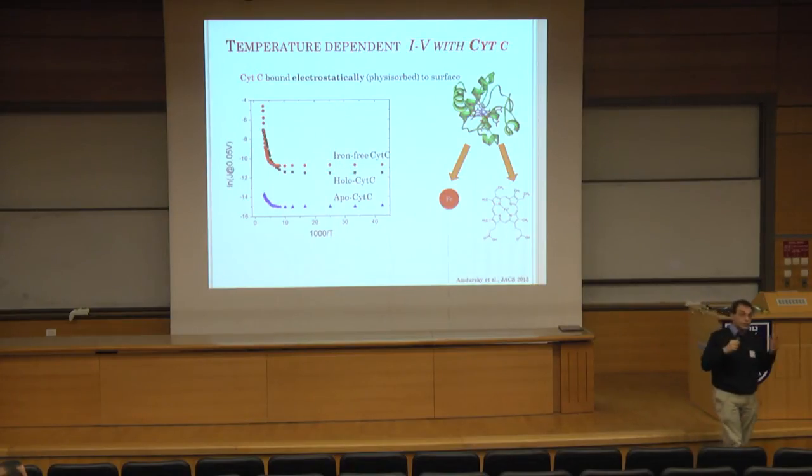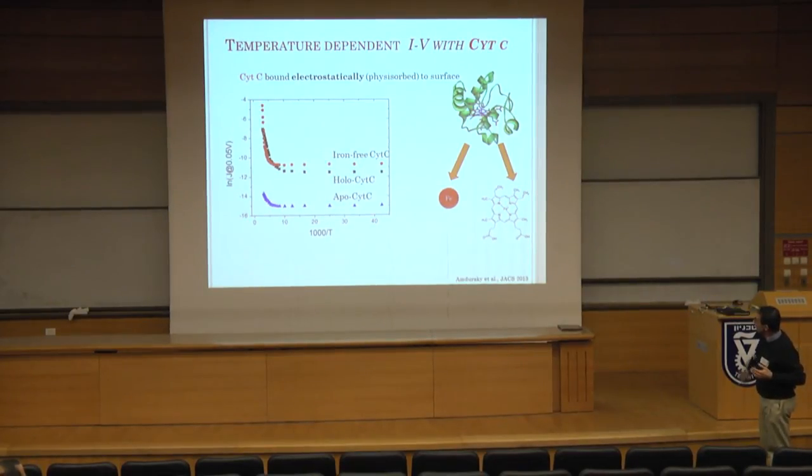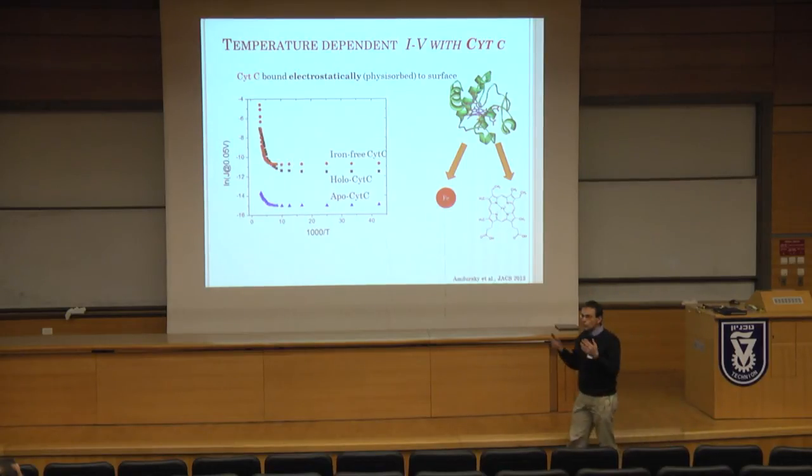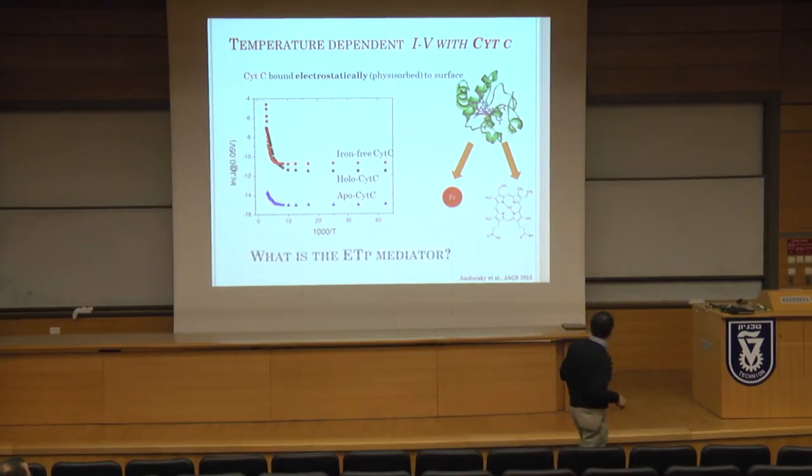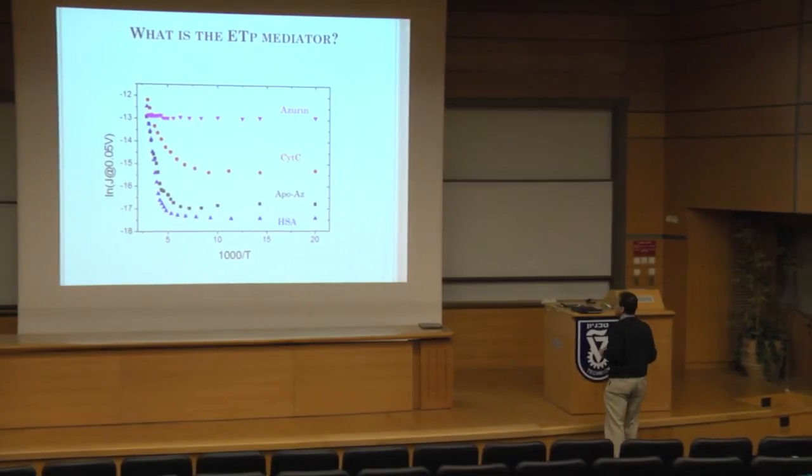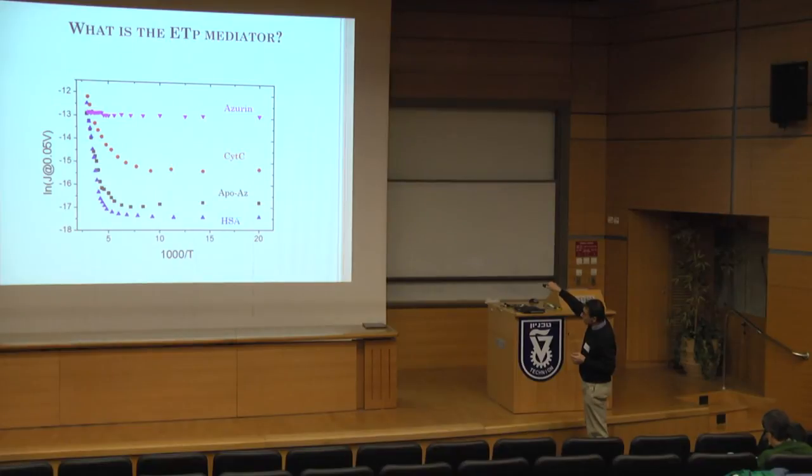The system can't anymore do the redox. With the heme group out, we see a big change. And I should tell you that here, the structure, the conformation changes. But this is an intriguing result. So maybe for solid-state electron transport, I don't need the redox process, the first indication. What is then the mediator? And so if you look at azurine cytochrome C, apo-azurine, the one without the copper, and this is the garbage collector, serum albumin. These are the temperature dependencies combined in one picture.